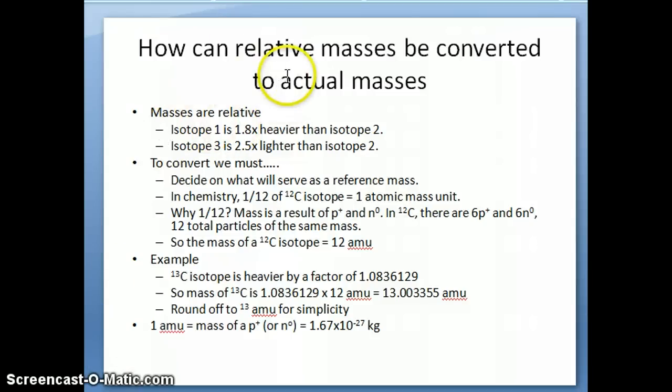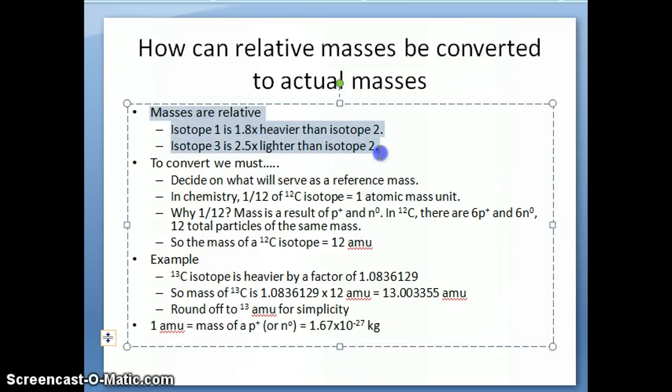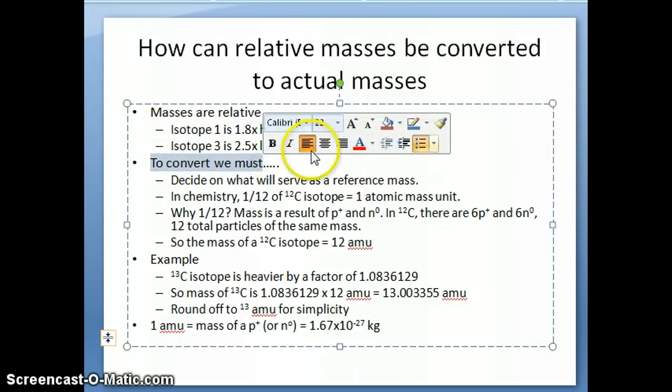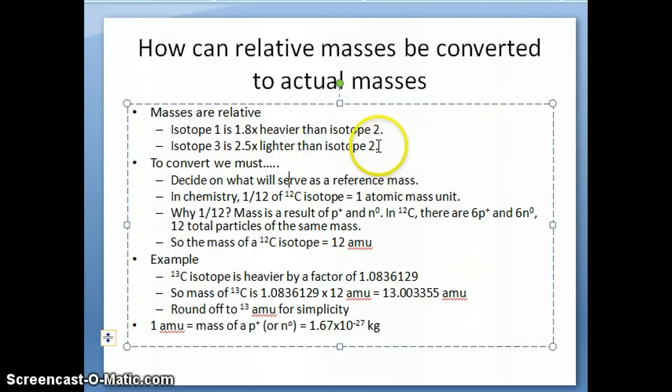So the next question is, we want to know how our relative masses—remember that the mass spec gave us relative masses—how can those relative masses be converted to actual masses? The masses you get out of your mass spec give you information like this: isotope 1 is, let's say, 1.8 times heavier than isotope 2; isotope 3 is 2.5 times lighter than isotope 2. But it doesn't tell you exactly what is the mass of isotope 1, isotope 3, or isotope 2. So in order to convert, we really have to set a baseline. We have to set a reference number.